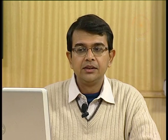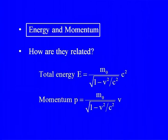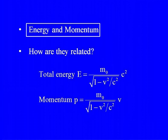Talking of both energy and momentum, how are they related? We know that E equals mc squared, and this m, the total mass of the body, is actually related to the speed at which the body is moving. So if m₀ is the rest mass of a body and it is moving at velocity v, its mass becomes m₀ divided by the square root of 1 minus v squared by c squared. Consequently, the momentum is defined as mass multiplied by velocity, but the mass here is velocity dependent.